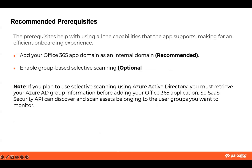Some recommendations to better use all available capabilities of Office are as follows. Not only a recommendation but a best practice is to add Office 365 app domains to the list of internal domains in SaaS Security API. Another recommendation is to enable group-based selective scanning. Selective scanning is the ability to include or exclude Active Directory groups from the scan process. You need to have your Azure Active Directory group information so SaaS Security API can discover and scan assets belonging to the user groups you want to monitor.